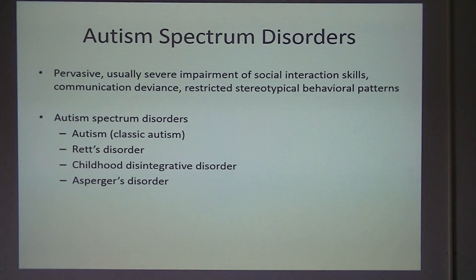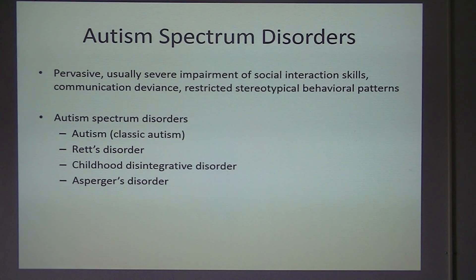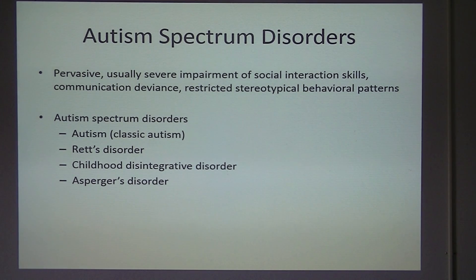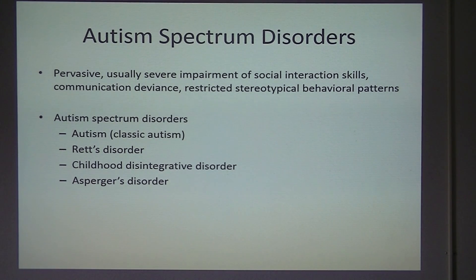People with Autism Spectrum Disorder tend to have communication difficulties, such as responding inappropriately in conversations, having a hard time reading non-verbal cues, or difficulty finding age-appropriate friendships. In addition, these people are overly dependent on routines, and if you get them out of routine even a little bit, you're going to see the consequences of that.